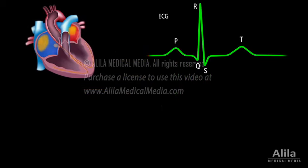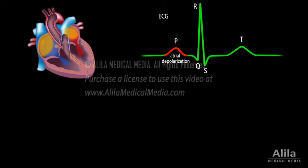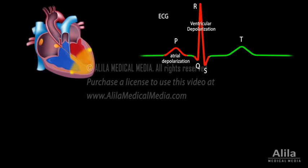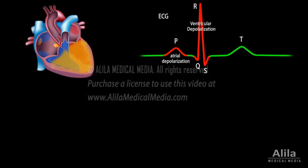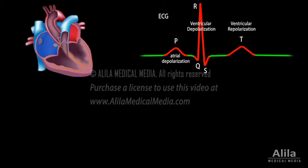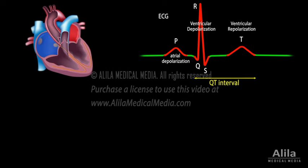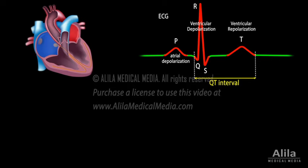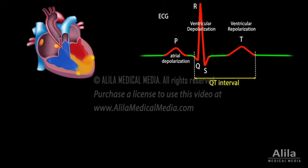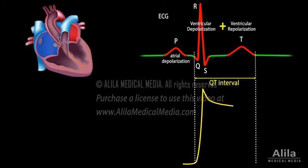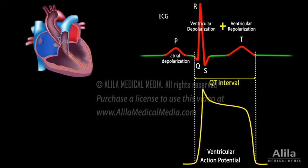On an electrocardiogram that records electrical activities of the heart, P wave represents atrial depolarization. QRS complex is produced by ventricular depolarization, and T wave corresponds to ventricular repolarization. The QT interval, measured from the start of Q wave to the end of T wave, reflects the time taken for ventricular depolarization and repolarization, which is basically the duration of action potentials in the cells of the ventricles.